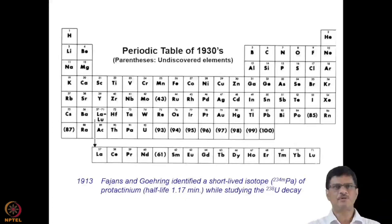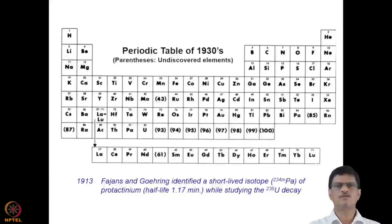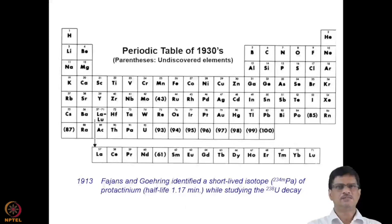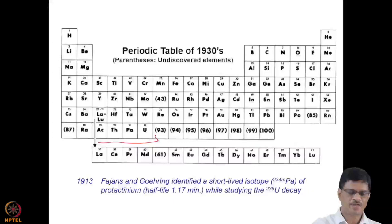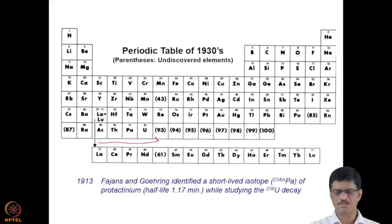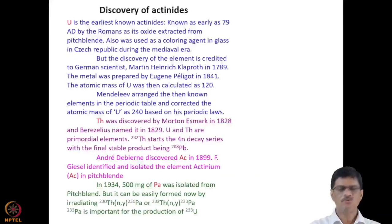Coming to the periodic table: in the early part of the 20th century, actinides were not placed in the periodic table the way we see them now — they were considered similar to transition elements. By that time, only actinium, thorium, protactinium, and uranium had been discovered. In 1913, Fajans and Göhring identified a short-lived isotope of protactinium with a half-life of 1.17 minutes while studying the uranium-238 decay.